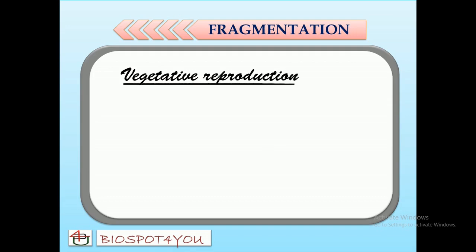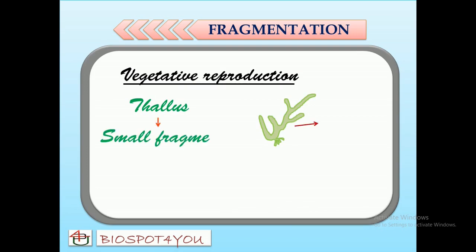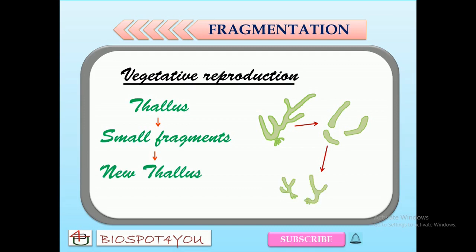Fragmentation is a method of vegetative reproduction in Vaucheria. During fragmentation, the thallus accidentally breaks up into small fragments. Each of these fragments becomes thick-walled, and from each fragment a new thallus will develop. However, this mode of vegetative reproduction is not common in the genus Vaucheria.